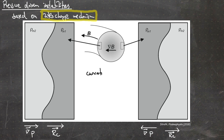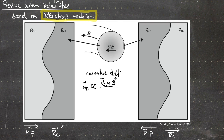The curvature drift is proportional to the curvature radius times the magnetic field direction, divided by the charge, curvature radius squared, and magnetic field squared.